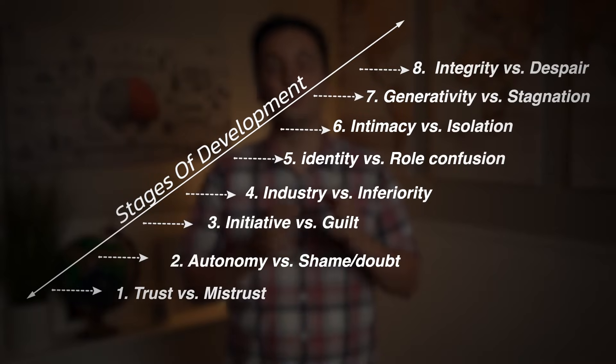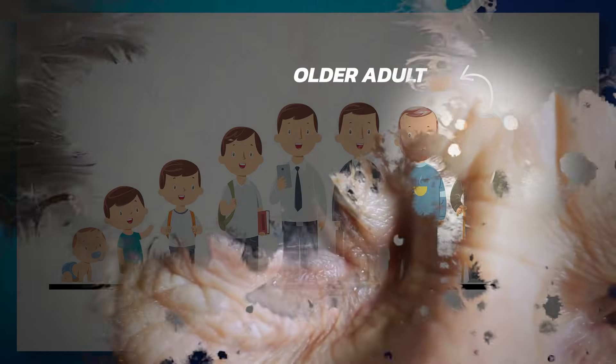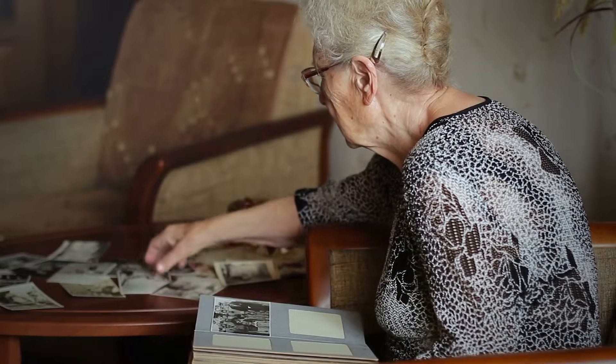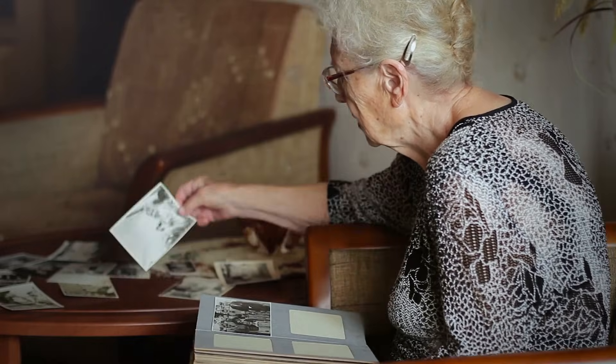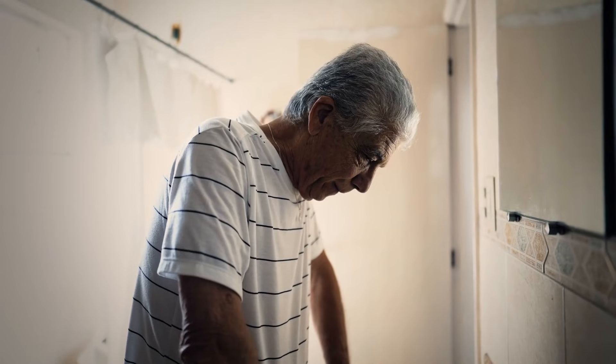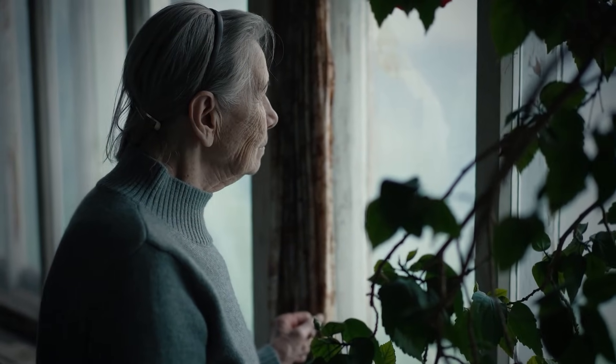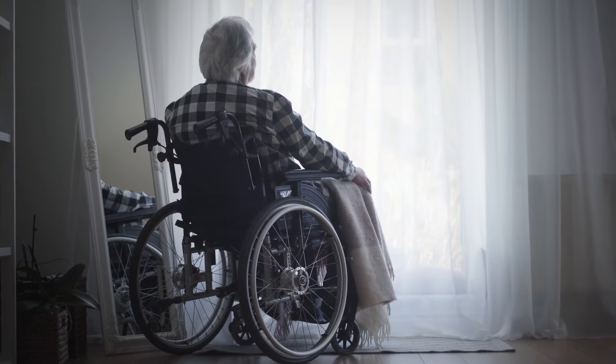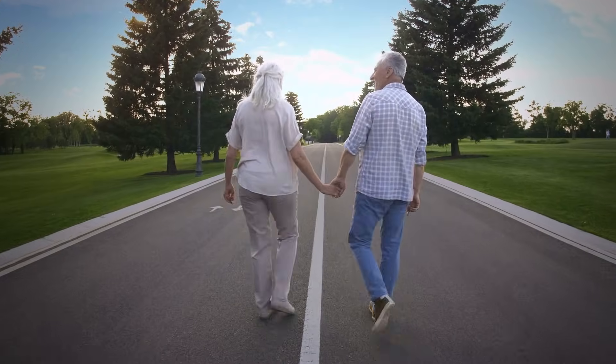The last stage is integrity versus despair. Here, individuals will reflect on their lives, and what happens in this stage really depends on the previous stages. Individuals who reflect on life and feel a sense of integrity, fulfillment, and acceptance of life as a whole will often feel like they had a purpose. On the other hand, individuals who experience despair may feel regret, bitterness, and sadness, feeling like they have not done enough with their life. Individuals that develop a sense of integrity are often able to cope with the concept of death more easily, while those who have developed despair may struggle, feeling like they have not lived life to the fullest.